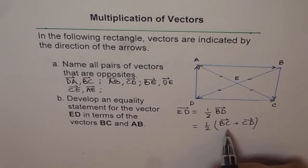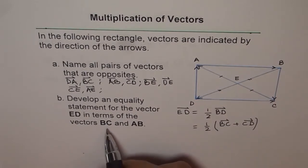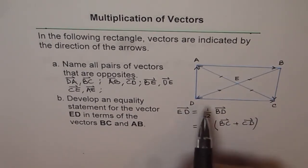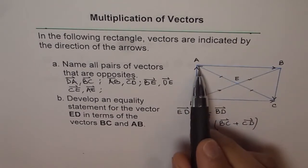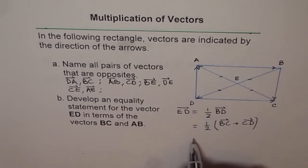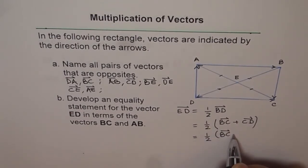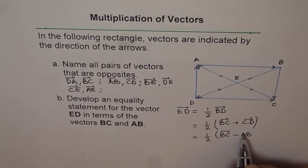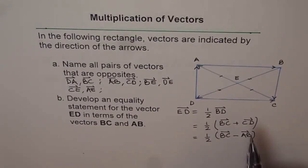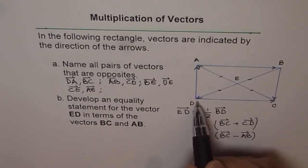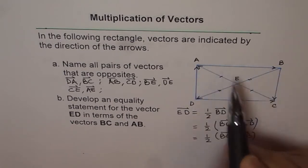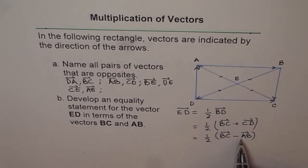Now, we need an expression involving BC and AB. CD is related to AB, but it is an opposite vector. So, we can write this as half of BC minus AB. CD is opposite of AB. Therefore, we wrote minus AB.